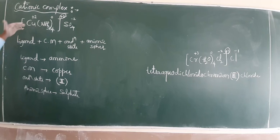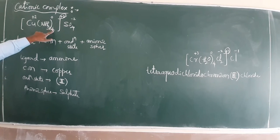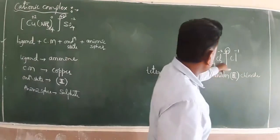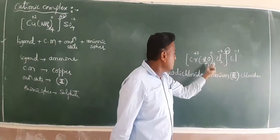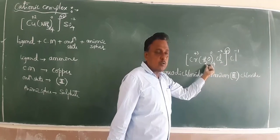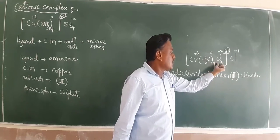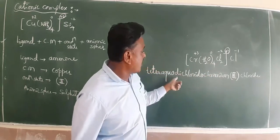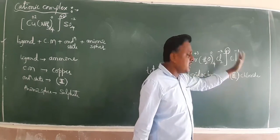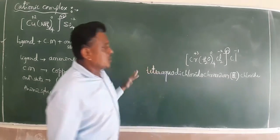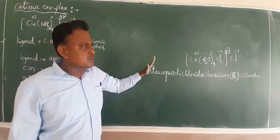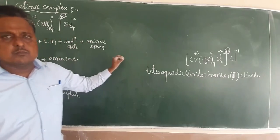These are three worked examples of cationic complex nomenclature: tetraamminecopper(II) sulfate, hexaamminecobalt(III) chloride, and tetraaquadichloridochromium(III) chloride. Keep practicing with different examples. In the next video we will continue with more examples of coordination complexes.